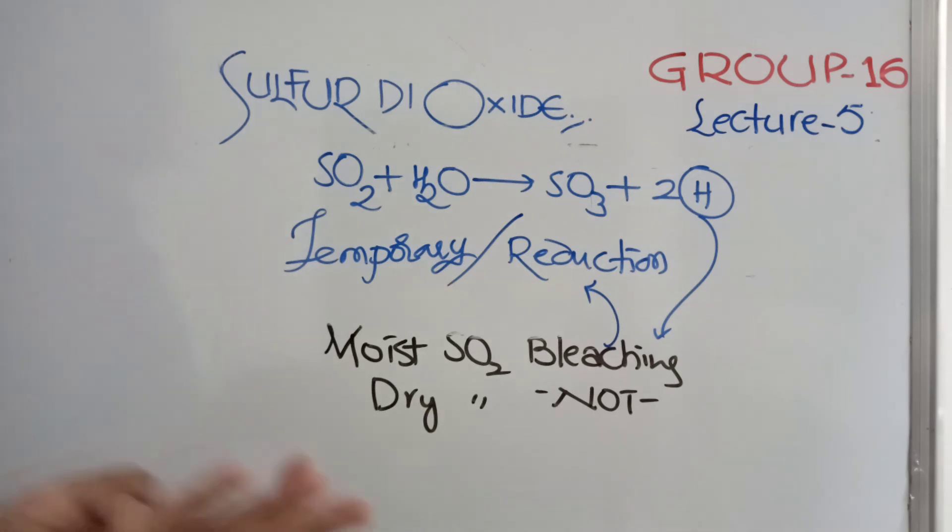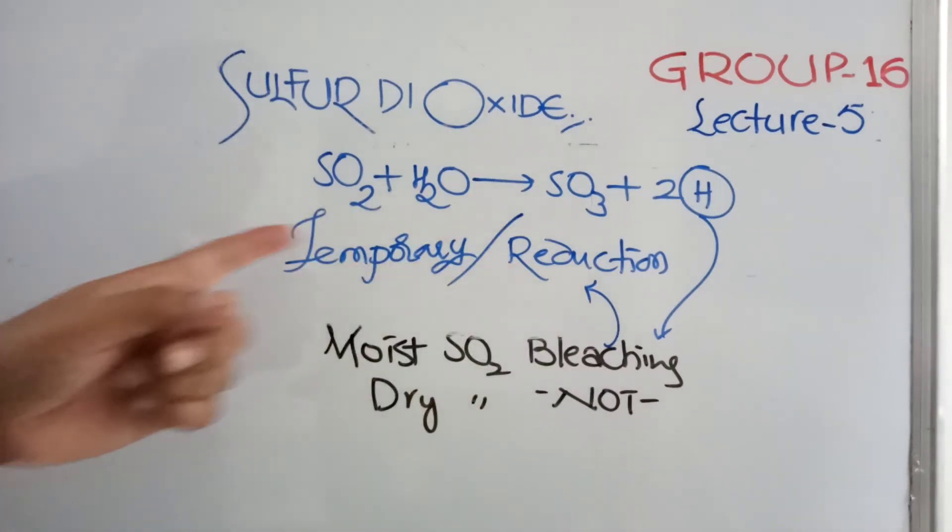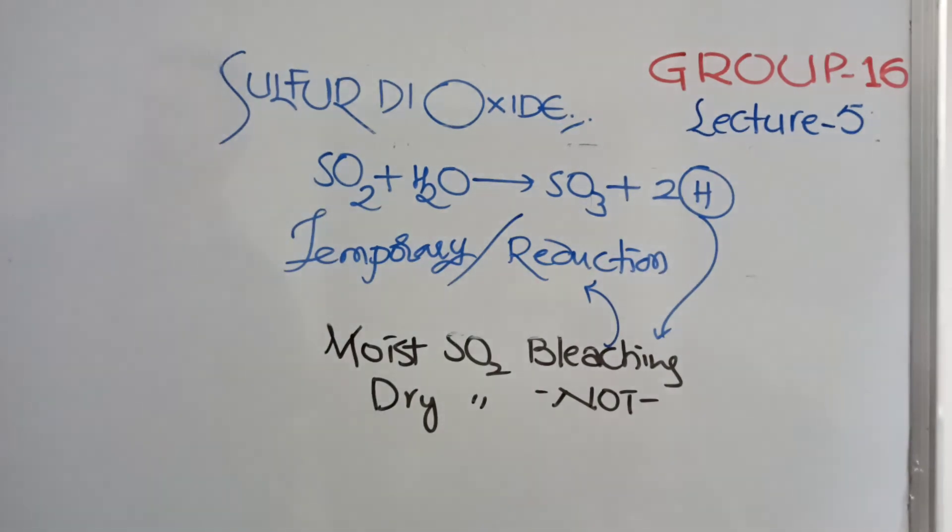Whatever the bleaching powder we know. Ozone we know. Hydrogen peroxide we know. All they are bleaching agents. But because of the oxidation. Sulfur dioxide is the bleaching agent because of the reduction. And the reaction takes place like this. This is about sulfur dioxide. In next session, we will discuss about sulfate trioxide. Thank you.